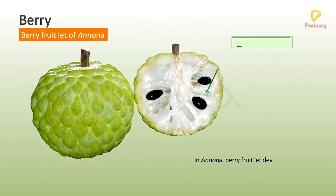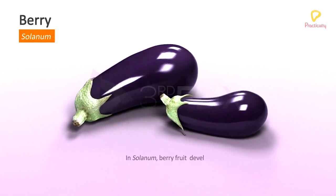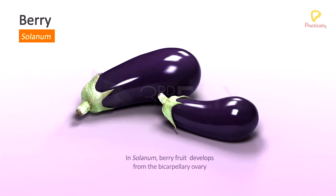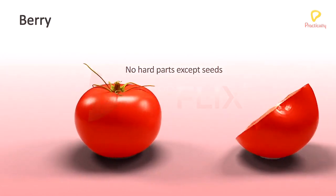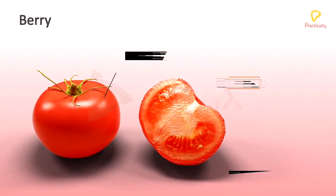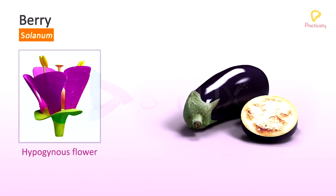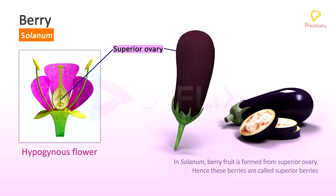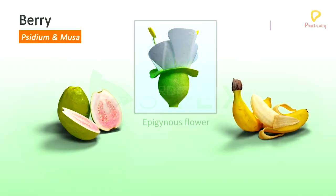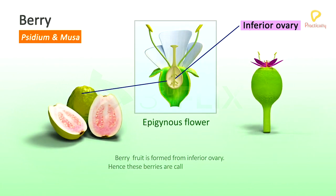Berry. In Annona, berry fruitlet develops from the monocarpellary ovary. In Solanum, berry fruit develops from the bicarpellary ovary. The fruits with no hard parts except seeds are called berry or baccate fruits. In berry fruit, pulp is formed by layers of pericarp, mostly by mesocarp and endocarp. In Solanum, berry fruit is formed from a superior ovary, hence these berries are called superior berries. In Cucurbita and Musa, berry fruit is formed from inferior ovary, hence these berries are called inferior berries.